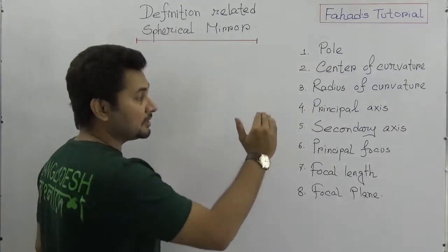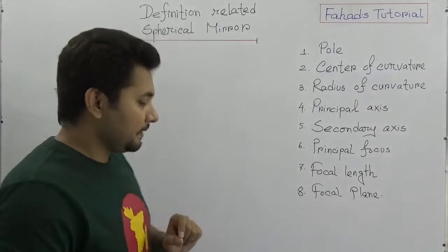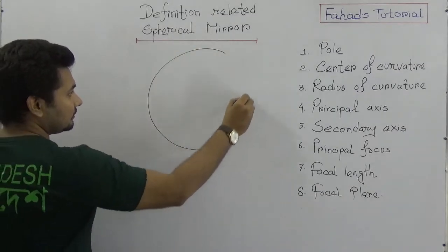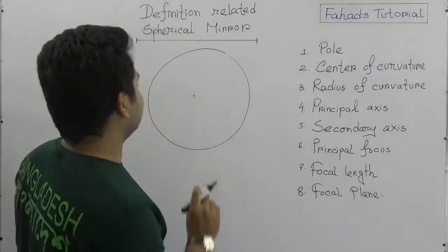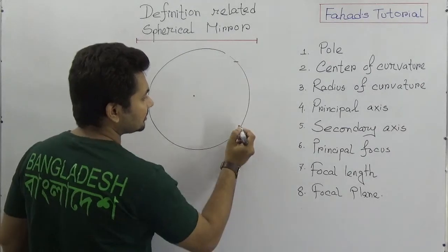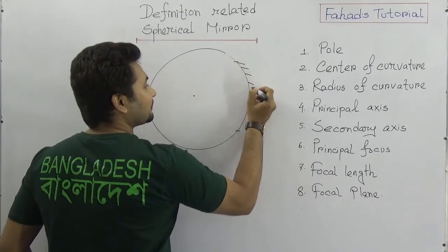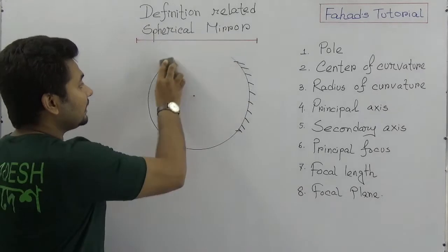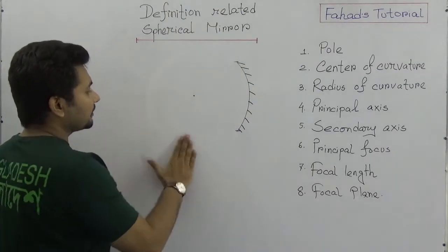Imagine a huge circle — this is the sphere, and this is the center of curvature. From this point to this point is the area, and this is the silvering surface. If I remove the other part, that will be acting as a concave mirror. So this is the concave mirror.